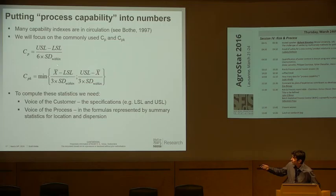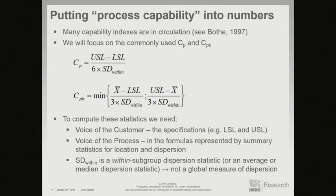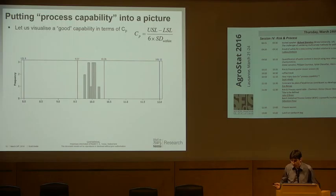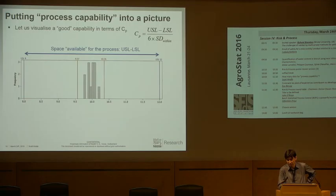Our formulas. There's a book of 800 pages on capability indexes — there's no shortage. We will focus on the two most used: CP and CPK. To use these statistics we need the voice of the customer, most often stated as specifications — upper to lower spec. And the voice of the process in the formulas is this measure of dispersion. An important point: SD within is called SD within because it's a within-subgroup dispersion statistic — it's not a global measure. A global measure would be incorrect for process capability.